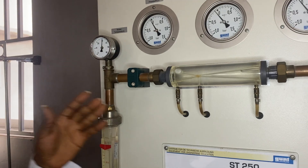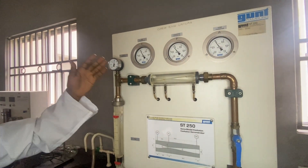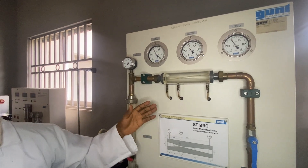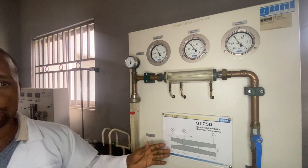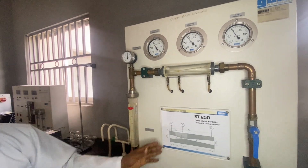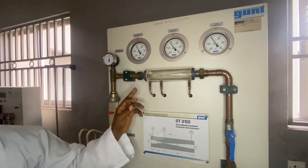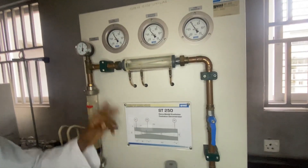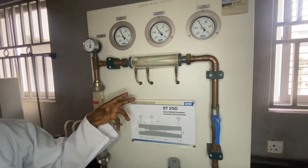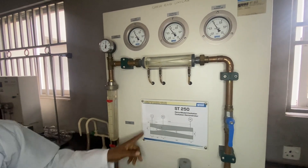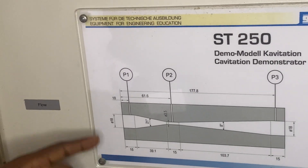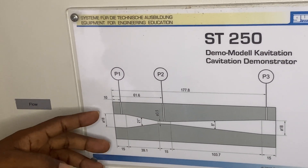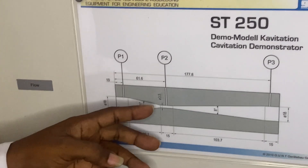Before we go into the experiment proper, it will be necessary for us to look at the different compartments or components of this demonstrator. First, we are going to be looking at the venturi meter. This is the venturi meter, also called the cavitation chamber. Here we have the cavitation chamber — you can see a particular channel that is constricted at this point.